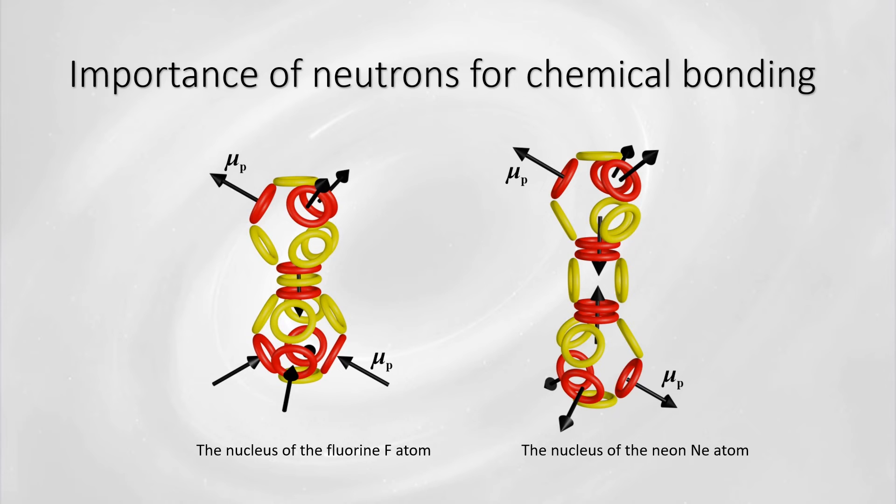For example, the nucleus of a fluorine atom has 9 protons but 10 neutrons. According to the model of the ring theory, this neutron placed between the globules enhances the strength of the bond between strongly positively charged globules without changing the orientation of the magnetic moment vectors of nuclear nucleons. An atom of fluorine with such a modeled nucleus can form diatomic molecules due to the oppositely oriented magnetic moment vectors of individual globules.